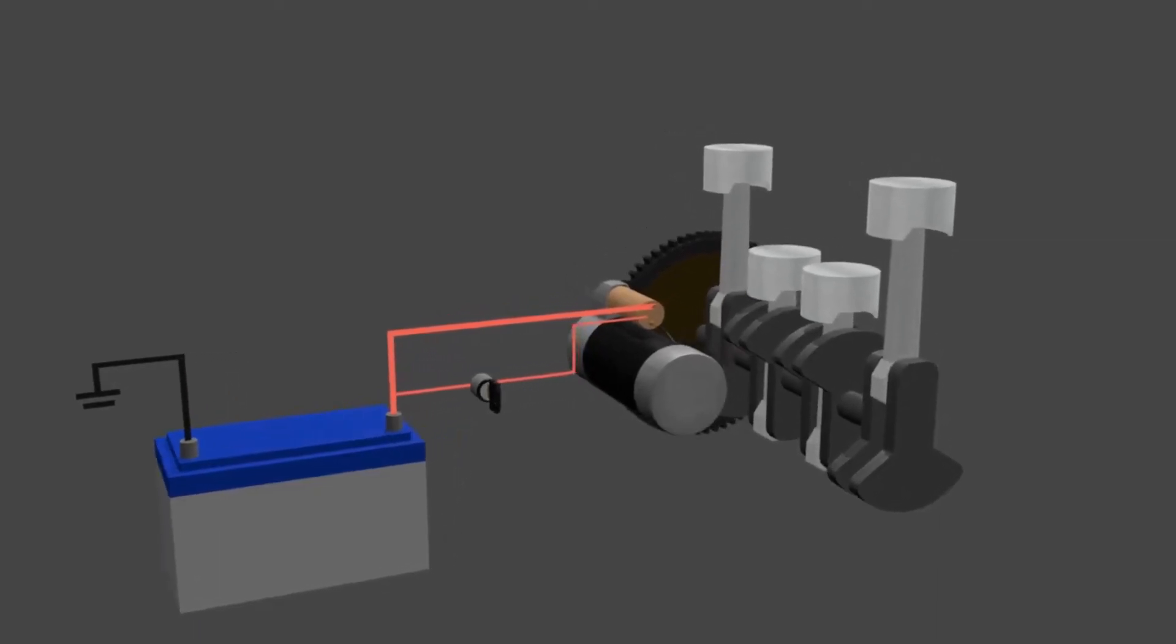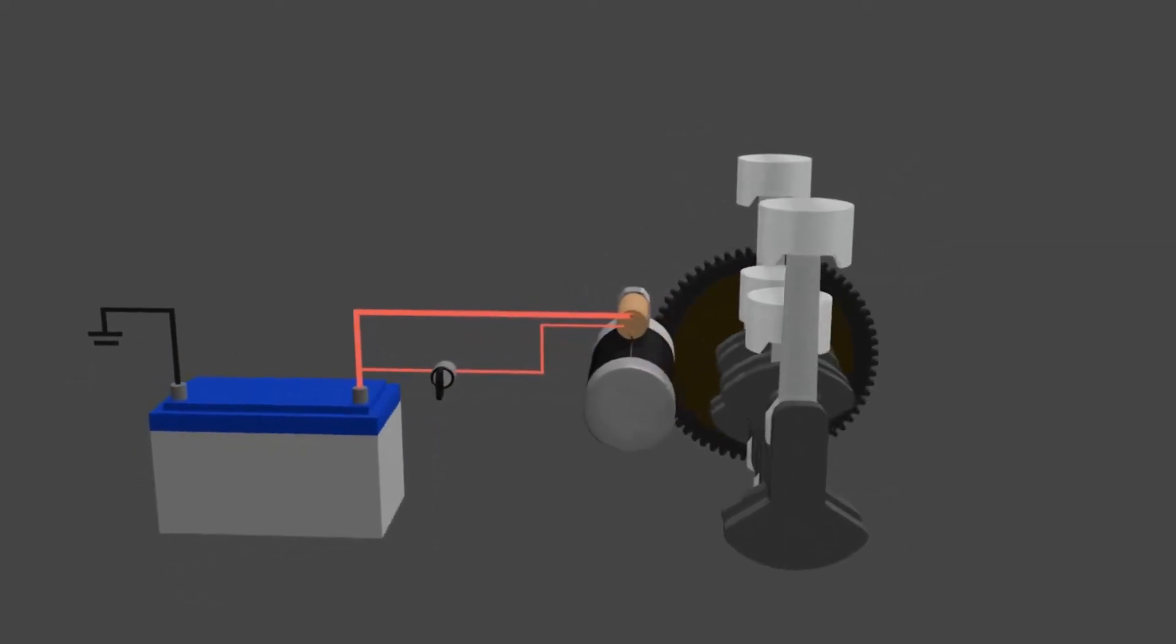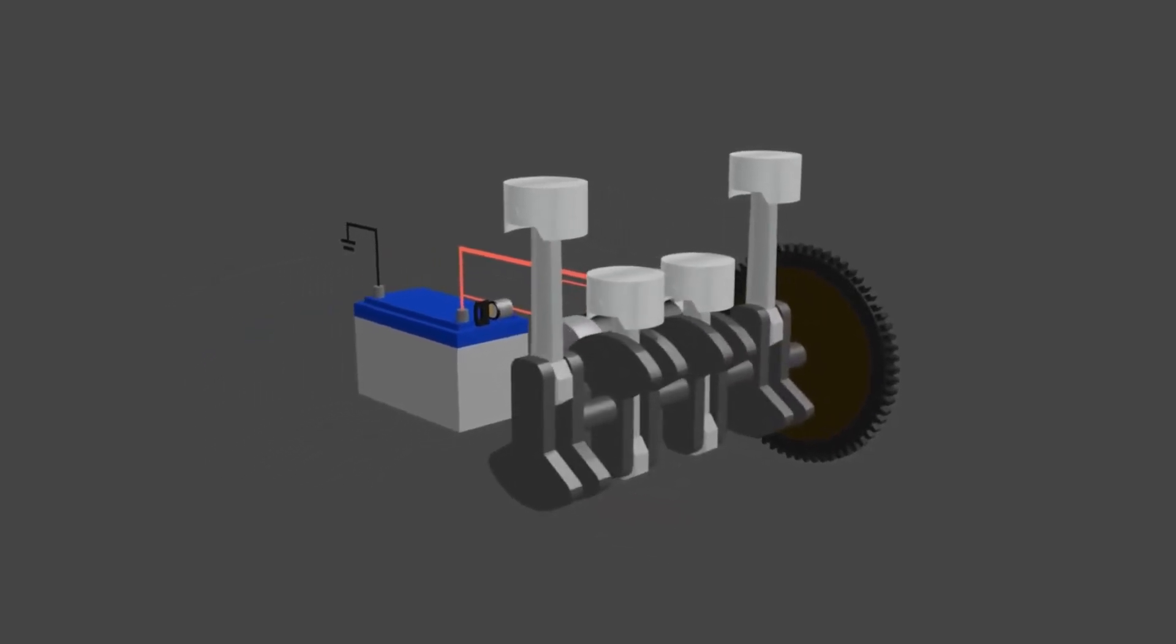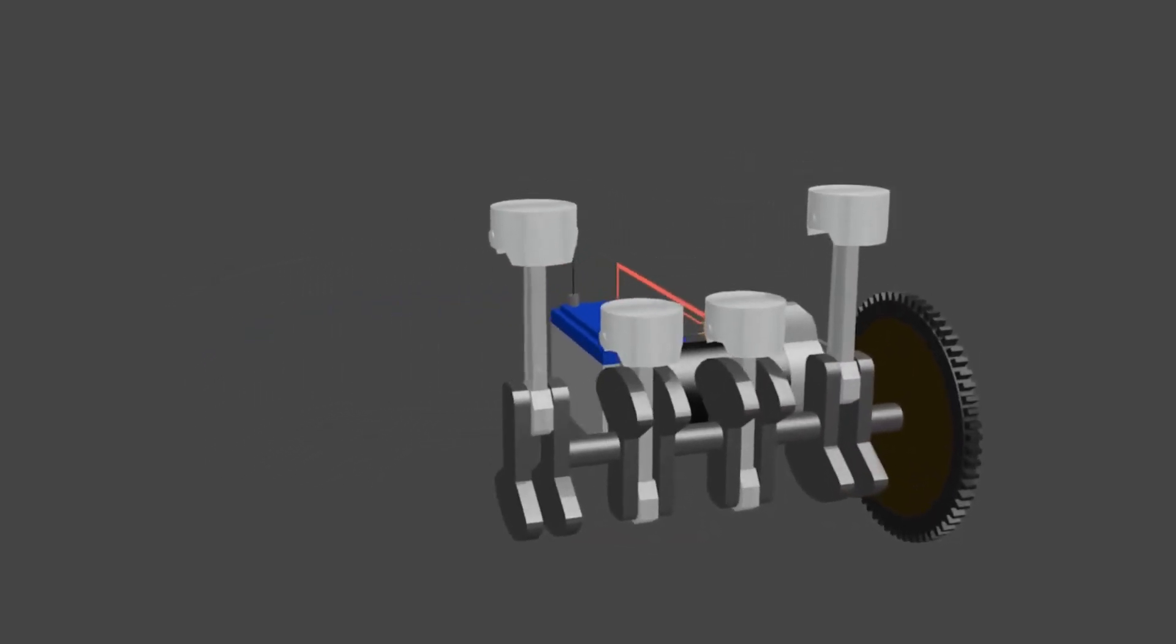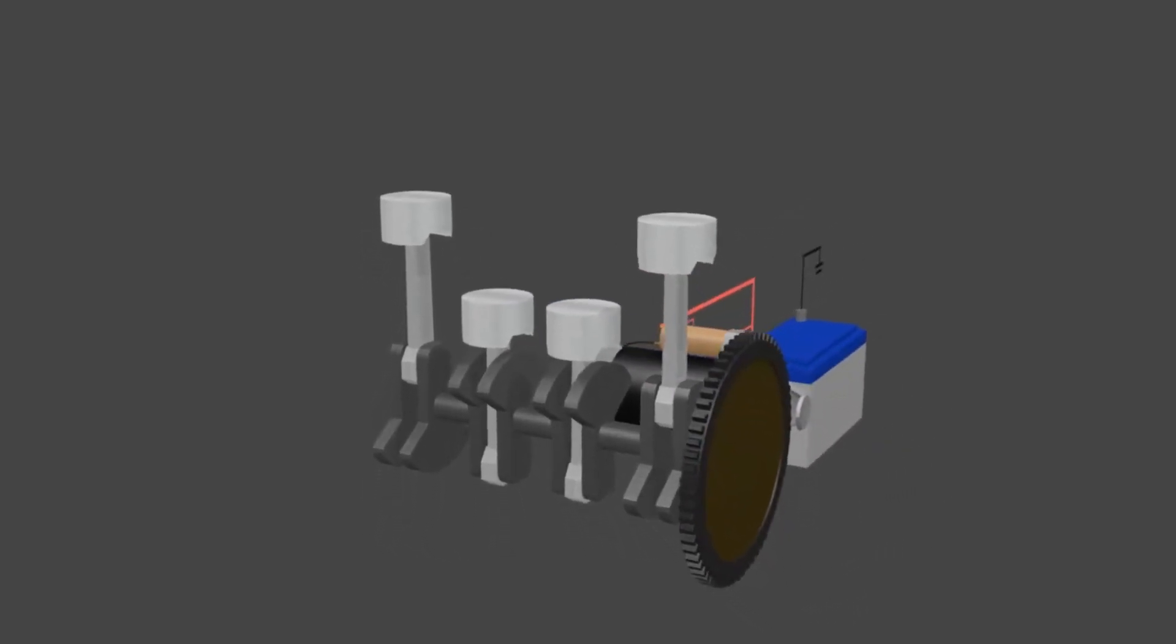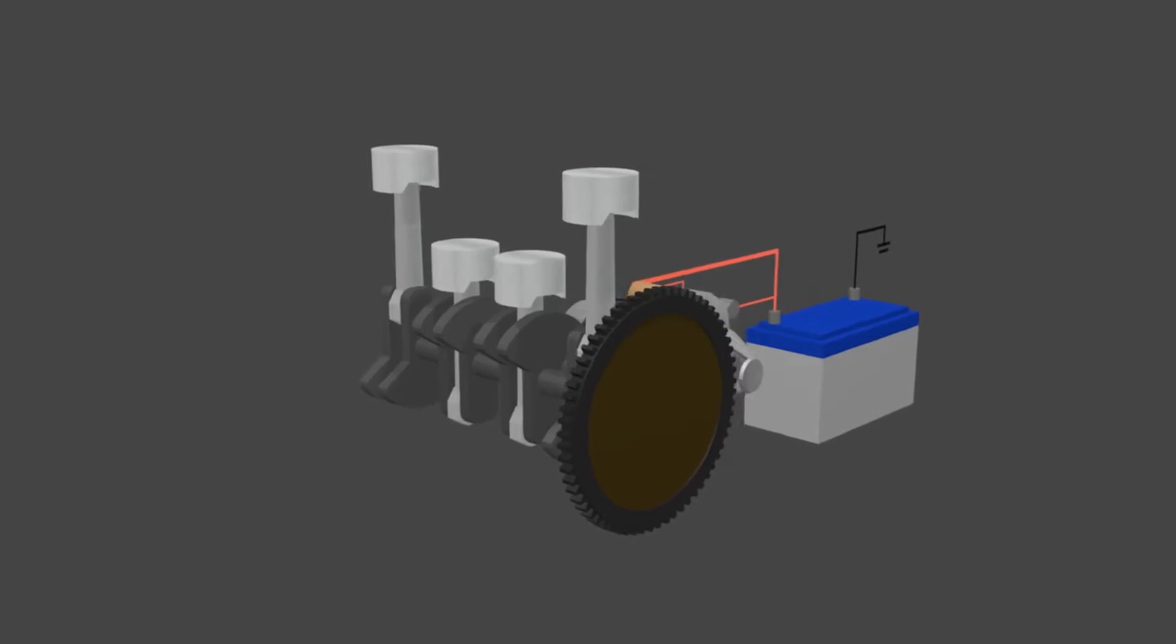We know that the engine cannot run by itself immediately. There must be a trigger to drive the crankshaft for combustion to occur. After the first combustion, the engine will run. This trigger mechanism is known as the starting system.